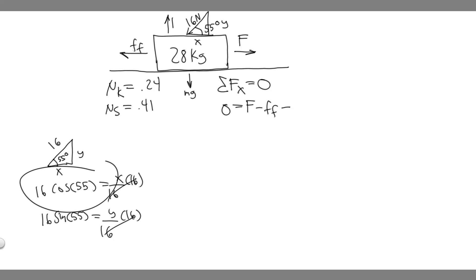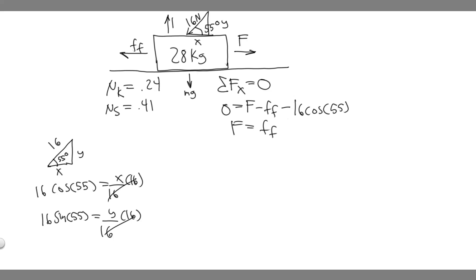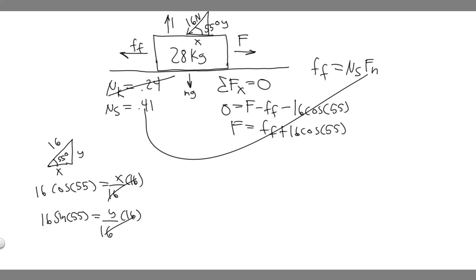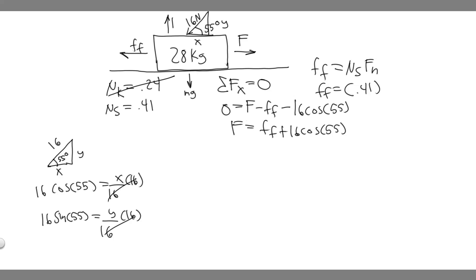Now we need to find the force of friction. The formula is: friction equals mu_s times F_n. Since the object is not moving, we use mu_s (static friction coefficient), which is 0.41. The kinetic coefficient 0.24 is given to throw you off — we don't need it. So force of friction equals 0.41 times F_n. To find the normal force, we take the sum of forces in the y direction. The object isn't accelerating, so sum of forces in y equals zero.